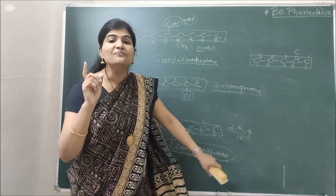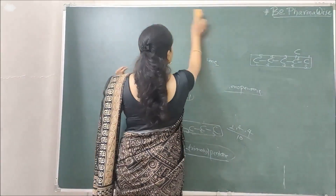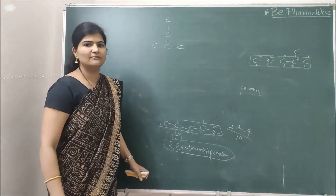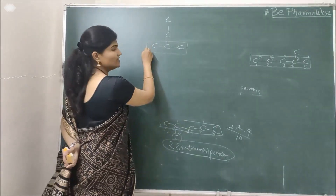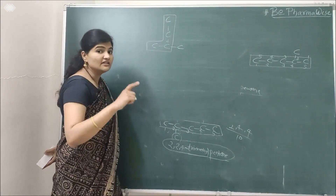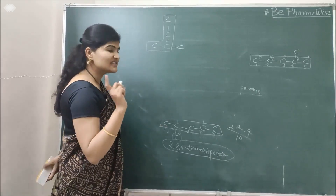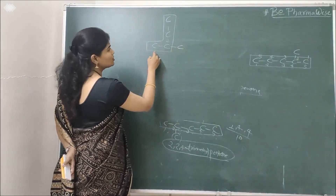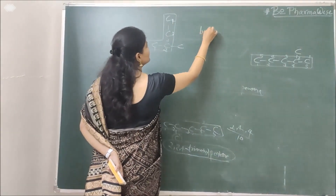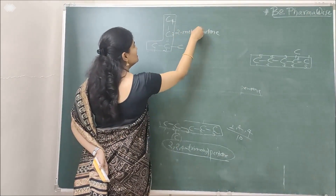Let us take a few more examples so that the concept is absolutely clear. Consider a structure — what is the longest continuous chain? Remember, it need not be horizontal. If you trace the correct path, you may find a 4-carbon chain that is longer than what appears horizontal. Number it so the substituent gets the lowest locant. If the substituent is on the second carbon of a 4-carbon (butane) chain with a methyl group there, it becomes 2-methylbutane.